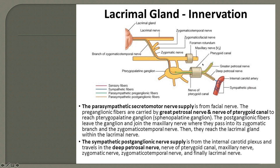In the middle cranial fossa, there is also a nerve called the greater petrosal nerve — some authors write it as the greater superficial petrosal nerve — to differentiate it from the deep petrosal nerve. The greater petrosal nerve carries preganglionic parasympathetic fibres.